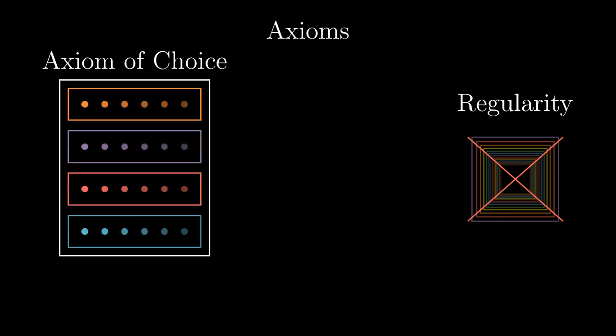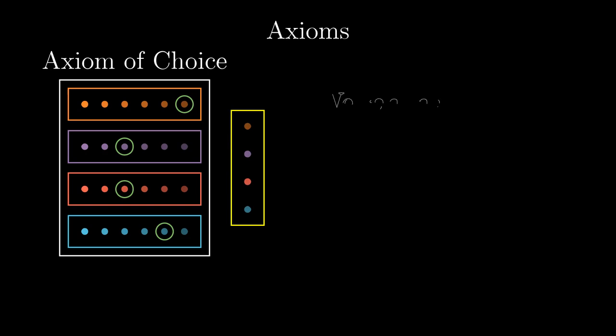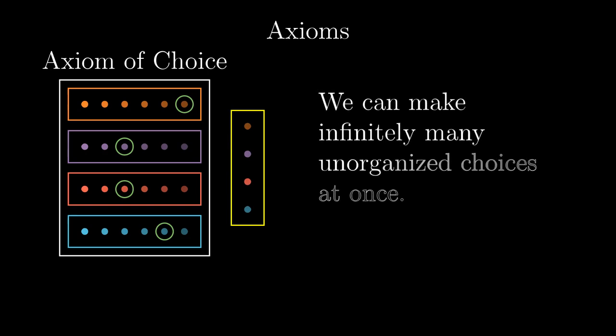It can be phrased as follows: For any set of nonempty disjoint sets, we can take exactly one element from each of these sets and pack them into a new set. A vague but fitting description of the axiom is: We can make infinitely many unorganized choices at once.